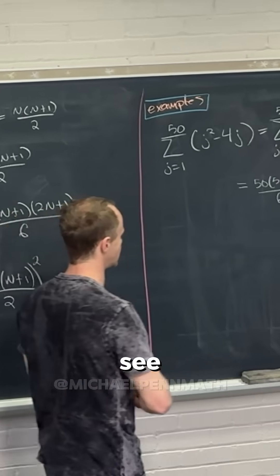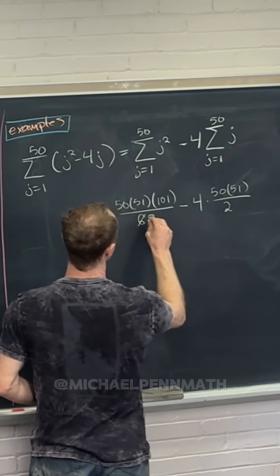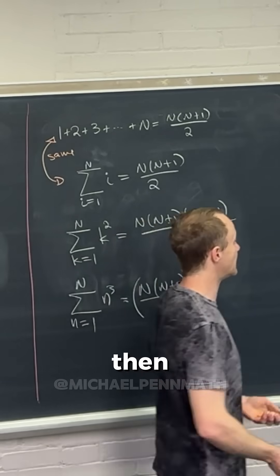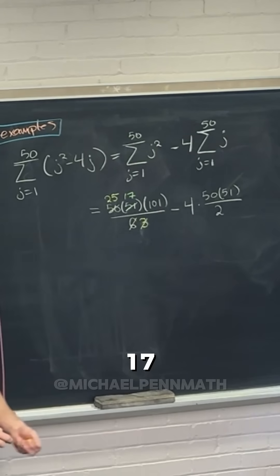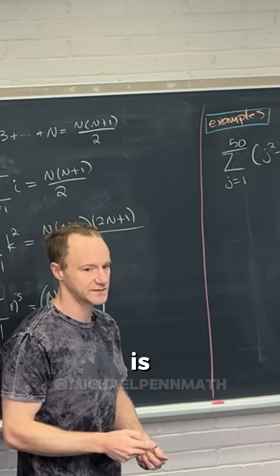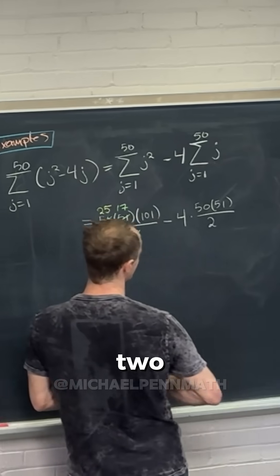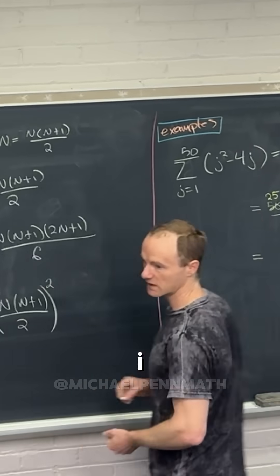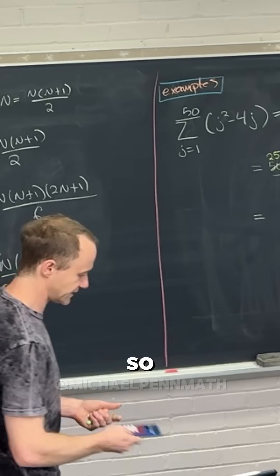Now we can simplify. The 6 cancels down to a 3 if we cancel the 50 down to a 25 by dividing by 2, and then the 3 cancels into 51 to give 17 — since 3 times 17 is 51. For the second term, the 2 cancels the 4 into a 2. So we end up with 25 times 17 times 101, which gives 425 times 101.